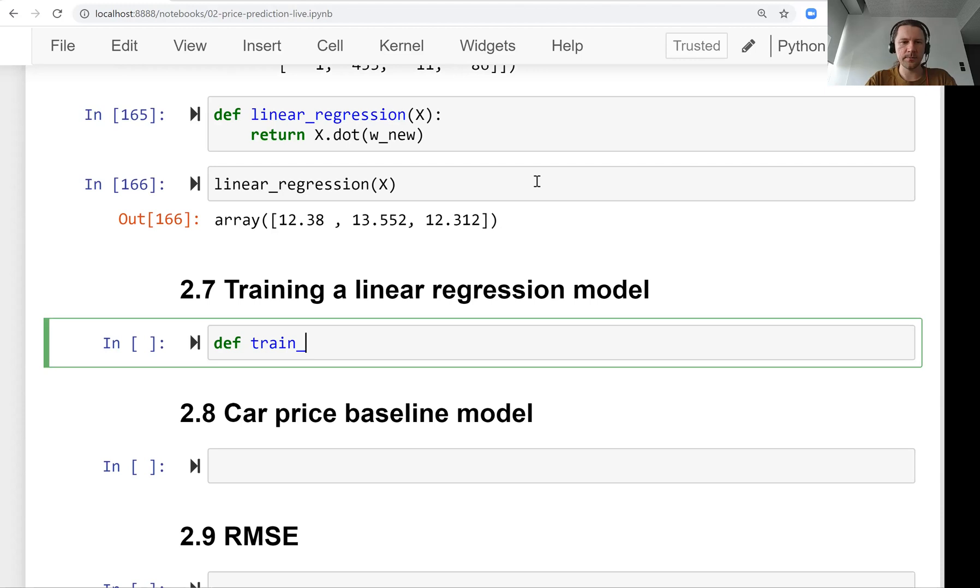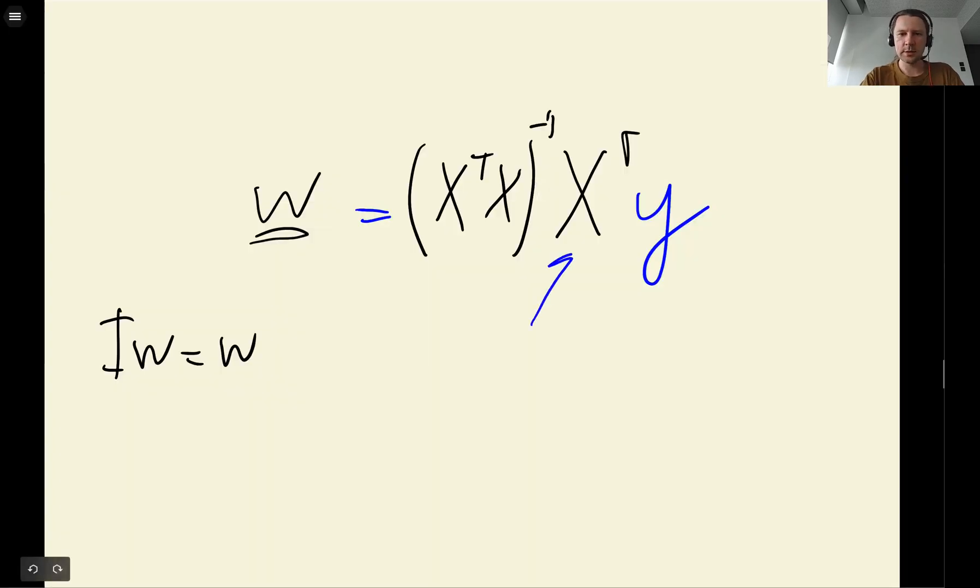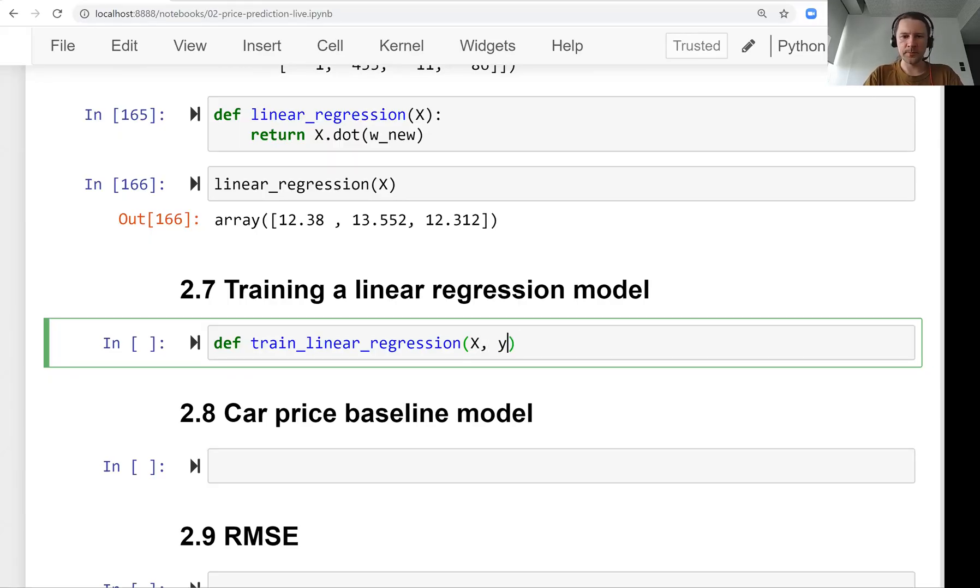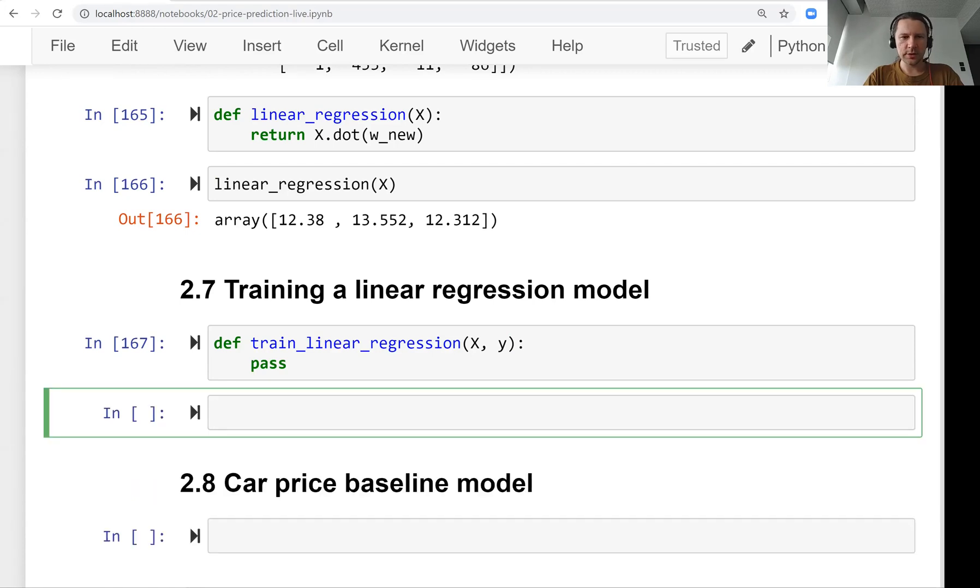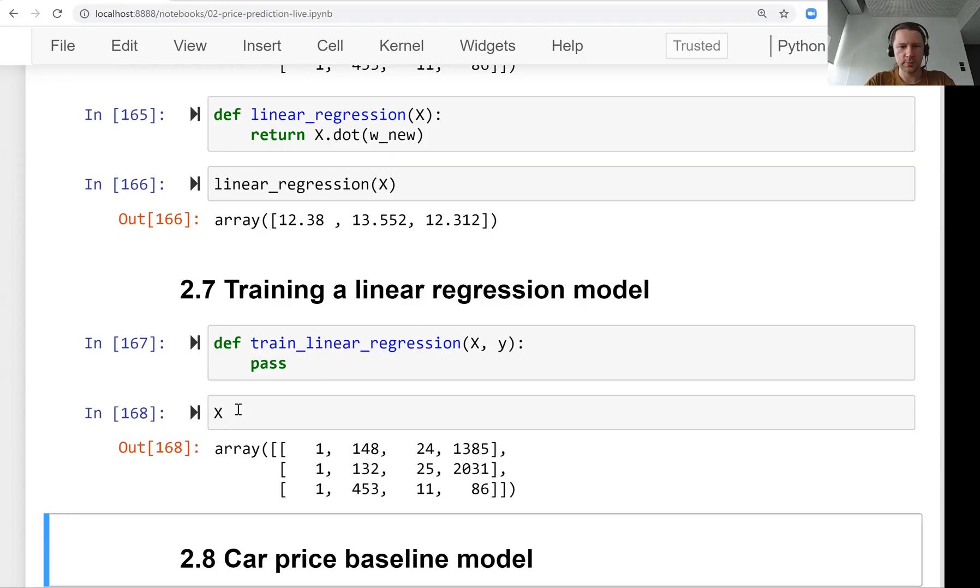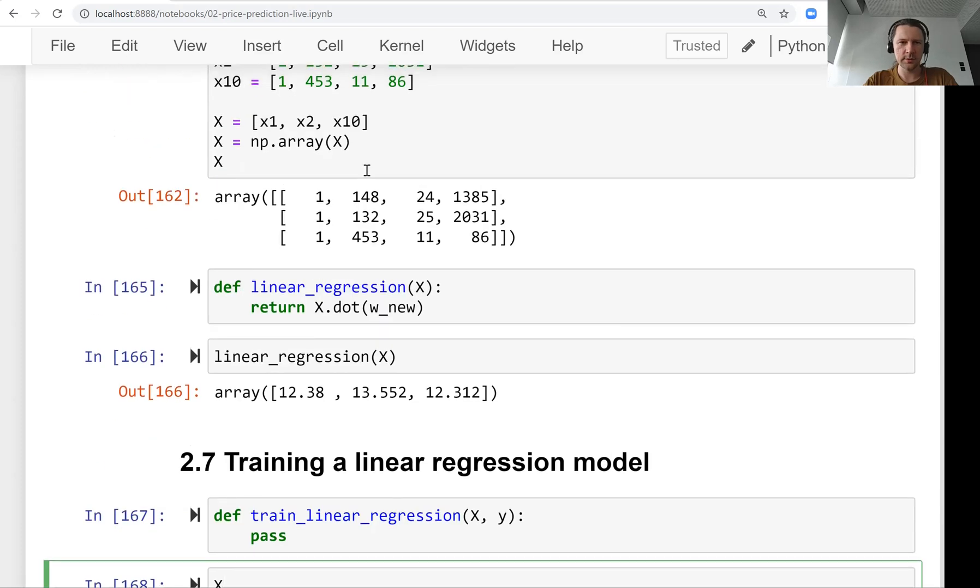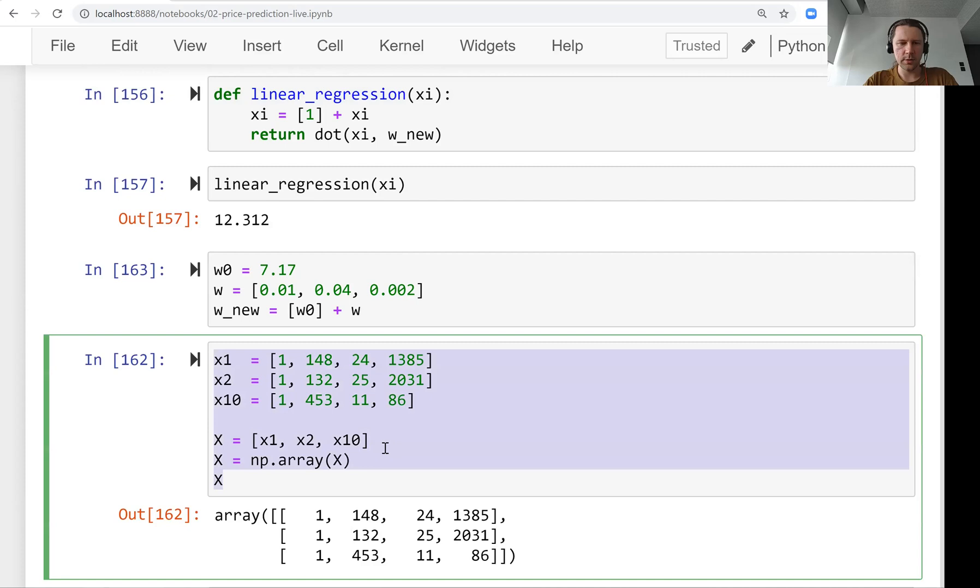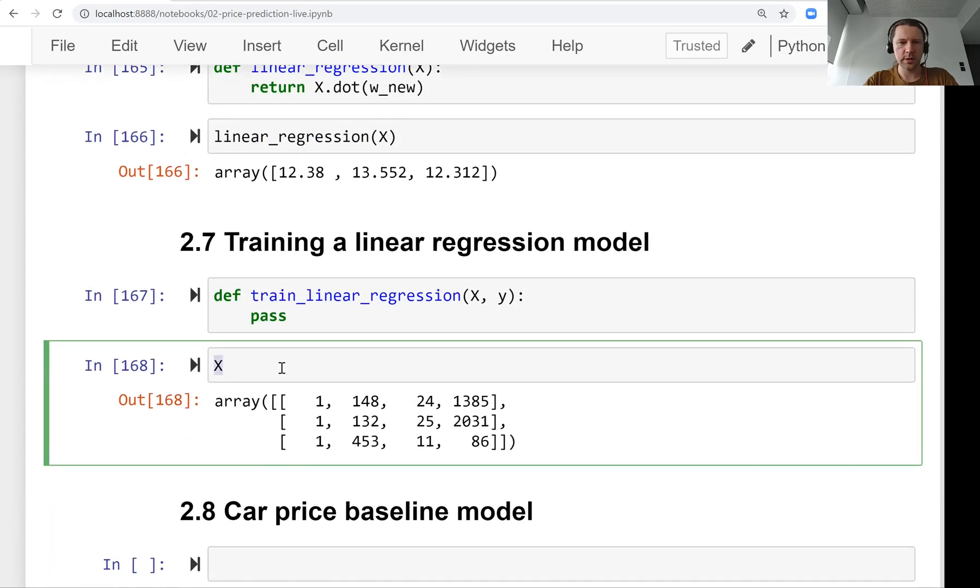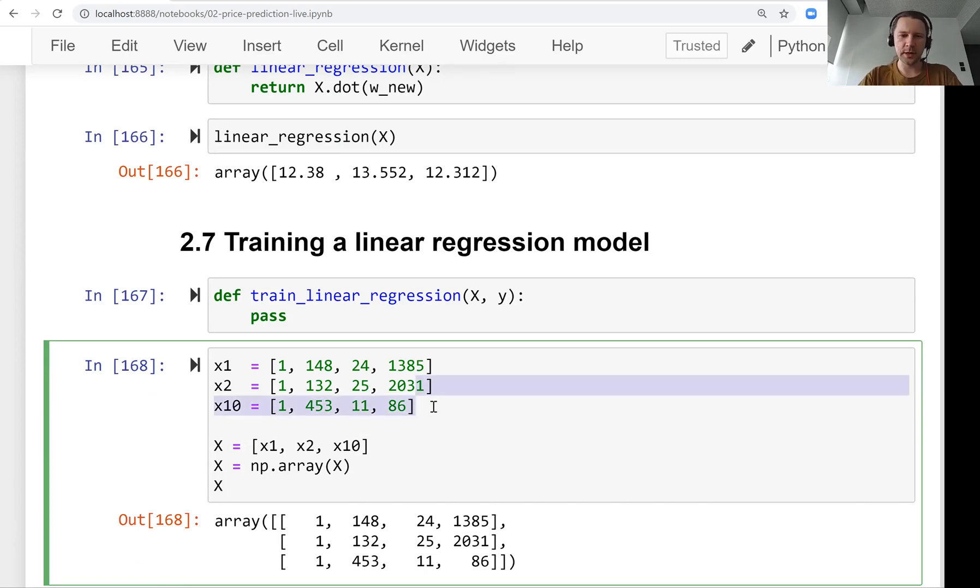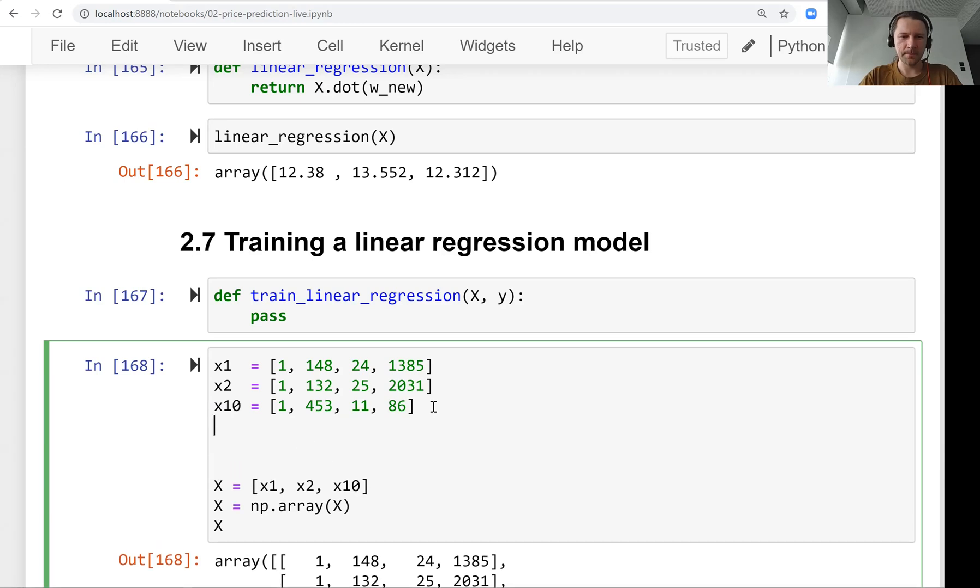So let's call this train_linear_regression. And the input to this is we need the x and we need the y. I will not implement it right now. Let's just try to go through this to understand what's going on here. So this x is a bit problematic because it has more columns than rows. So for this kind of matrix, the inverse will not necessarily exist. So let's just come up with a matrix ourselves.